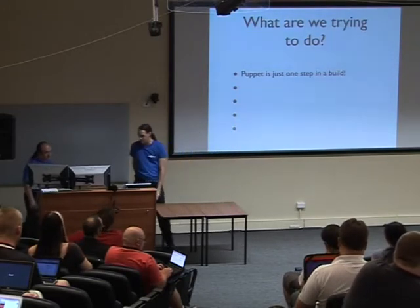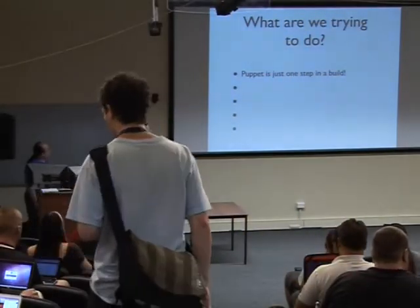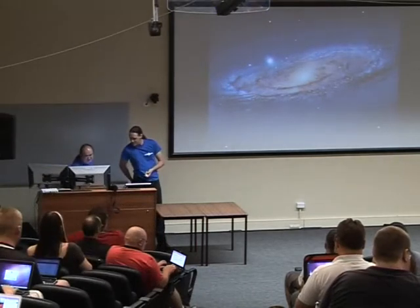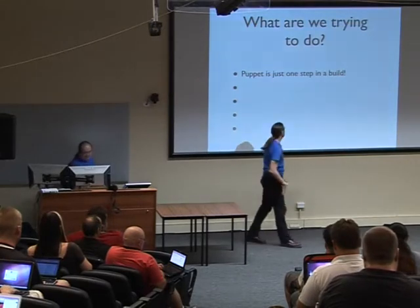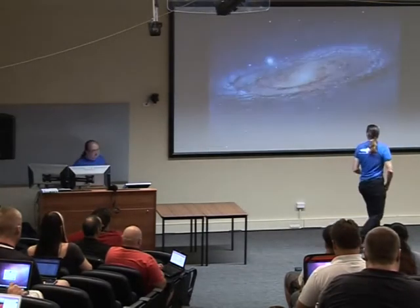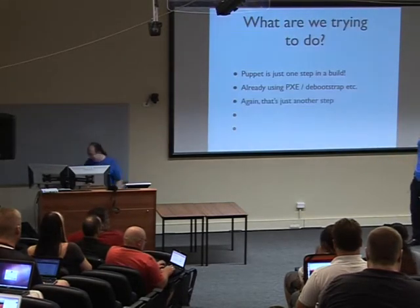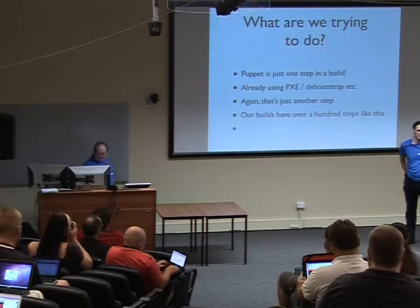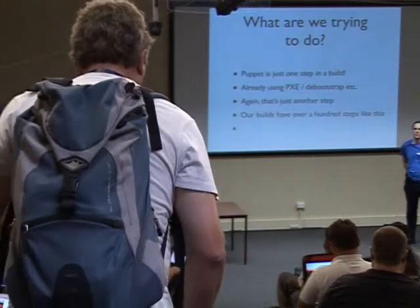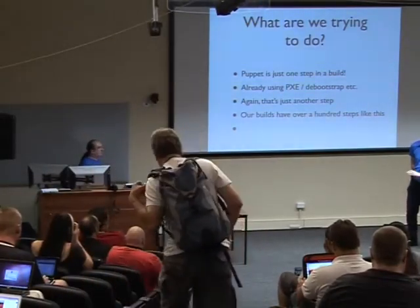When we're building a new system, there are actually quite a few steps. For example, we're already using Pixie and D Bootstrap, we're already using Puppet — that's just one step. We have about a hundred steps like this when we're doing a new build, and this is for the simplest type of build we do. This is before we start building a cluster of machines for people or start really looking at tuning their databases or anything like that.